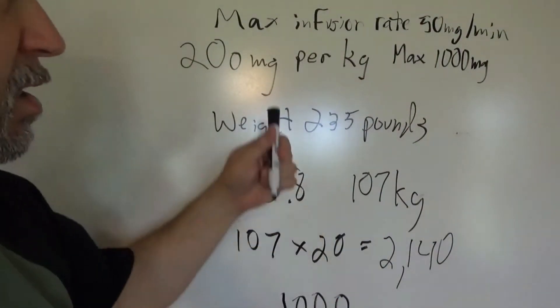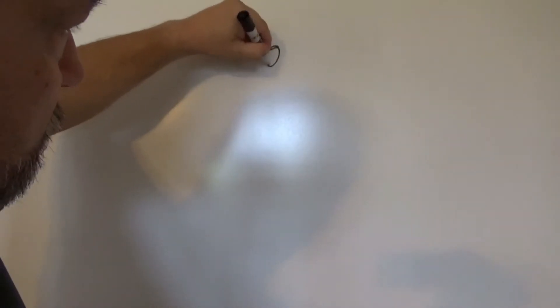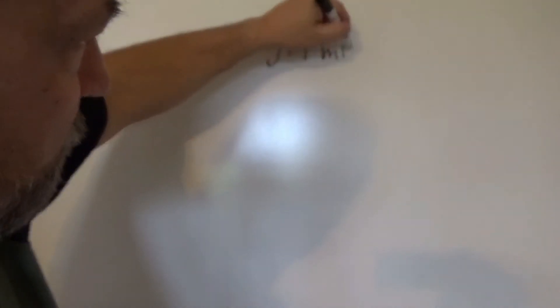We've got a maximum infusion rate of 50 milligrams per minute and we know we've got to give 1000 milligrams. Now let's talk about the concentration we have — this is a typical concentration and typical way for this to come in. For the infusion, we are to add 1000 milligrams to a 100 ml bag of saline. On hand we have 500 milligrams per 1 ml vial.